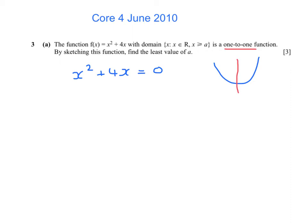I'm actually interested in finding the turning point. Go back to where it crosses the axis. If I factorize, what I can see is that it crosses the axis at two points. It crosses the axis at minus 4 and it crosses the axis at 0.